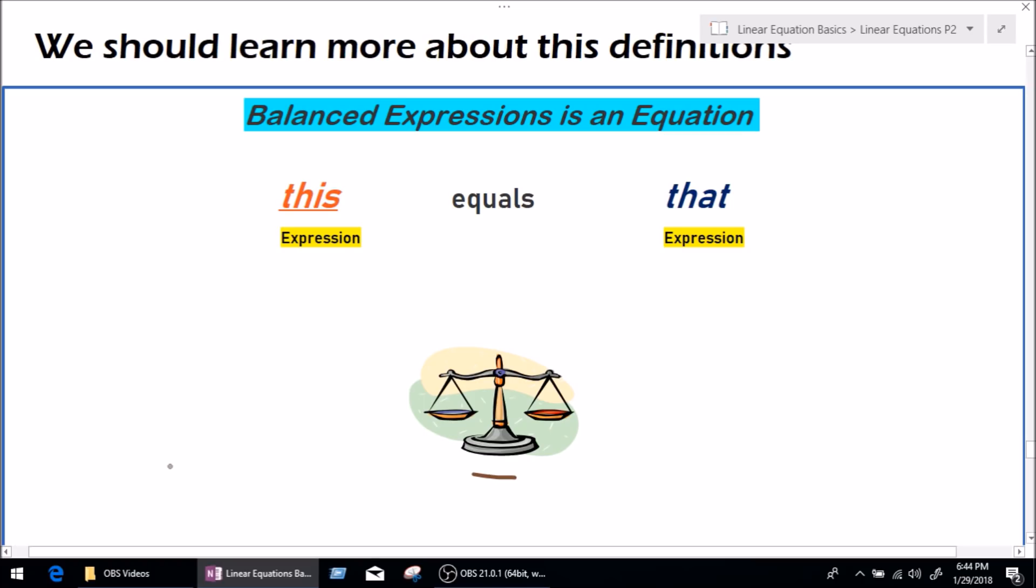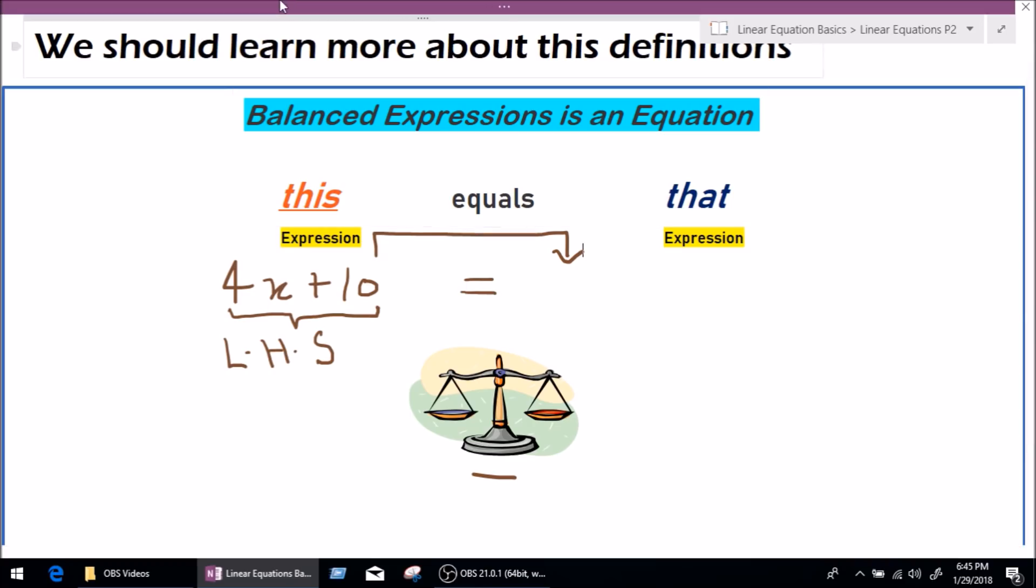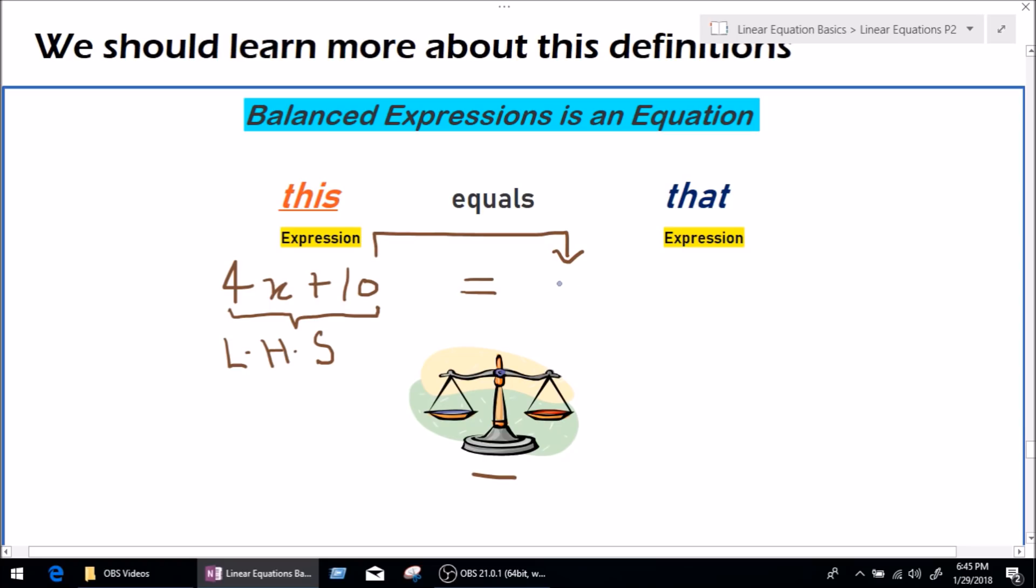Alright, so let me write an expression right here and see how this balances. 4x plus 10. Now, this is 4x plus 10, but we don't know what is that. And what is equals? Equals basically means equal to sign. So, on the left hand side of our equation, we have the expression, which is 4x plus 10. But there's nothing to balance this expression on the other side of the equal to. Means, it is an expression, but it is not yet balanced. So, how do we balance this?